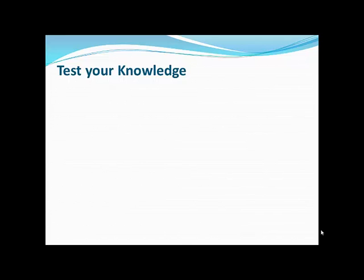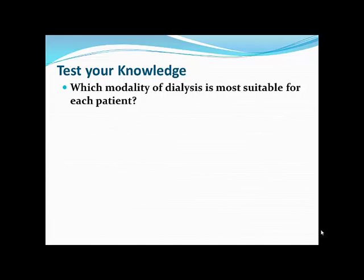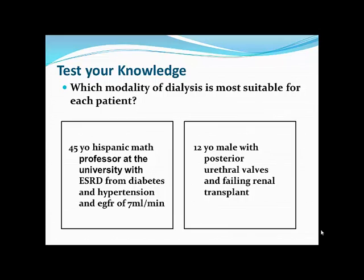Case-based question: a 45-year-old math professor with ESRD from diabetes and hypertension, eGFR of 7 mL/min. Both hemodialysis and peritoneal dialysis are reasonable. It is a younger mobile patient with residual renal function. Studies suggesting a PD survival advantage in the first one to two years may be partly attributable to better preservation of residual renal function in PD versus HD.